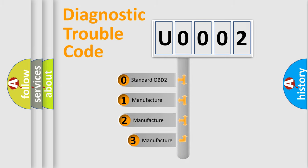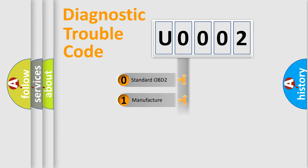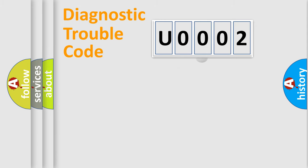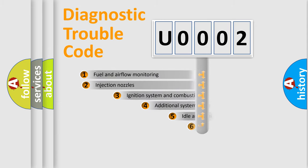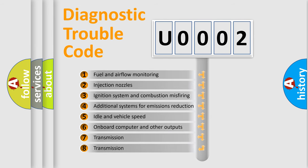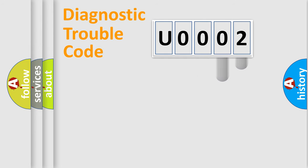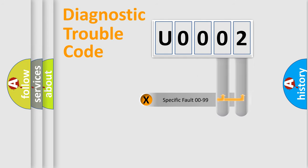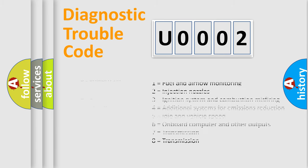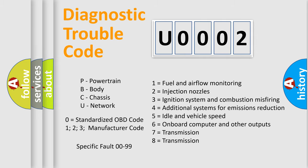If the second character is expressed as zero, it is a standardized error. In the case of numbers 1, 2, or 3, it is a more specific expression of a car-specific error. The third character specifies a subset of errors. This distribution is valid only for the standardized DTC code, and only the last two characters define the specific fault of the group. Such a division is valid only if the second character code is expressed by the number zero.